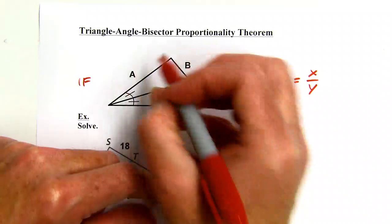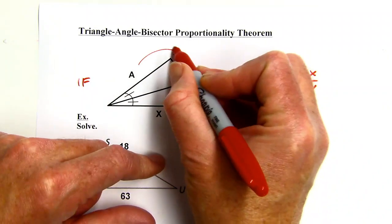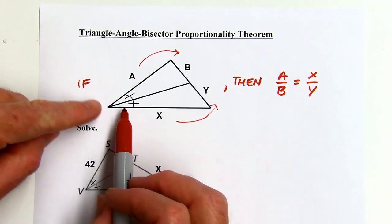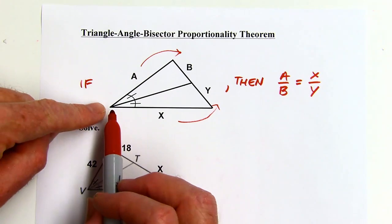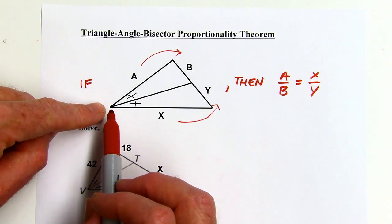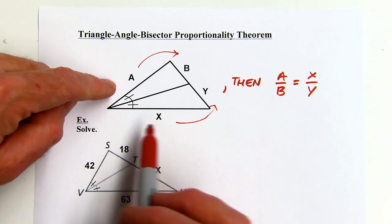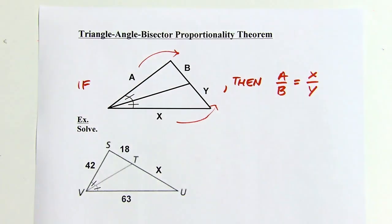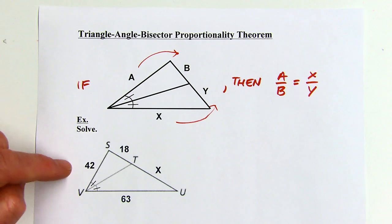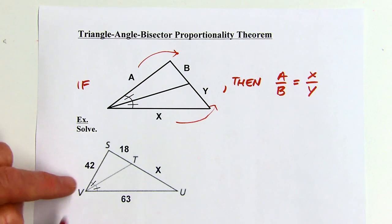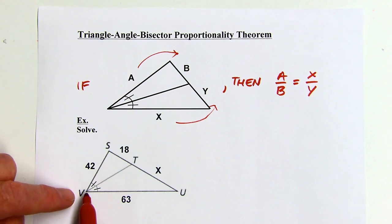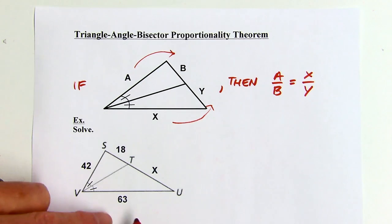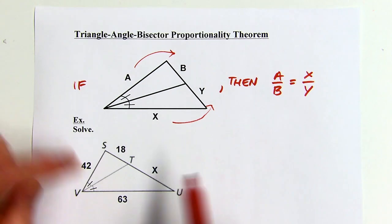This piece is to that piece as this piece is to that piece. When writing the proportion, I start at the bisected angle and work outward — that's how I remember it. In this example, the bisected angle gives us: 42 is to 18 as 63 is to x.